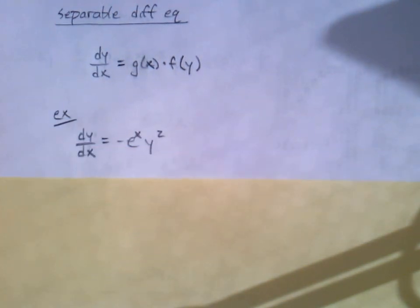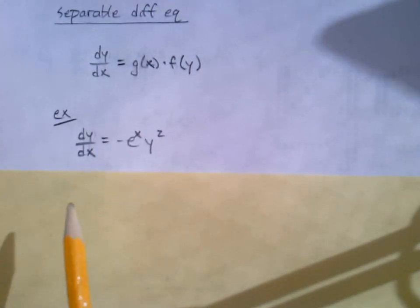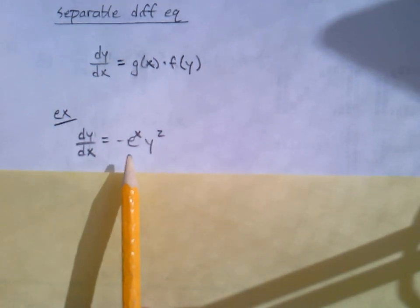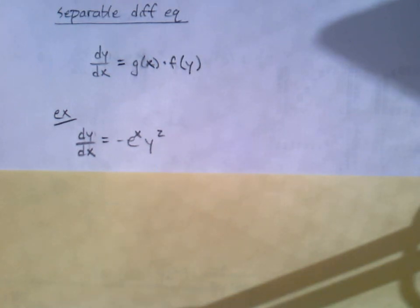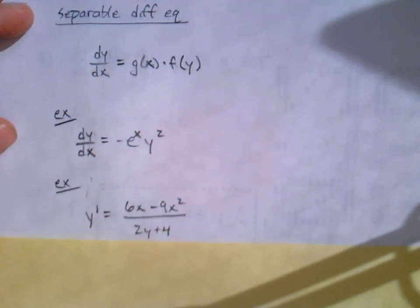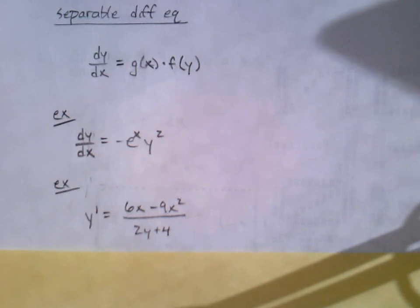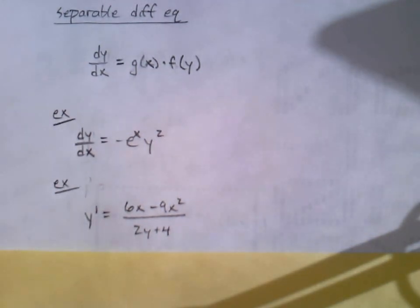Let me show you a couple examples before we get into the solving techniques. Here's one: dy over dx equals negative e to the x times y squared. I've got a function of x multiplied with a function of y, so I've separated the x's and the y's.